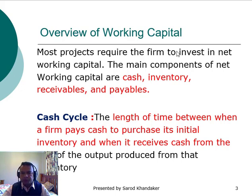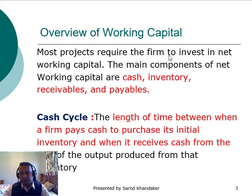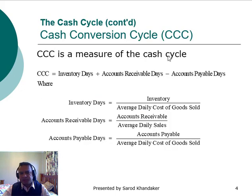When we look at working capital management, we need to understand a few things. One is the cash cycle. The cash cycle is the length of time between when the firm pays cash to purchase its initial inventory and when it receives cash from the sale of output product from that inventory. This slide shows some measures of the cash cycle and ways to calculate the cash conversion cycle: inventory days, accounts receivable days, and accounts payable days. The cash conversion cycle includes inventory days plus accounts receivable days minus accounts payable days.